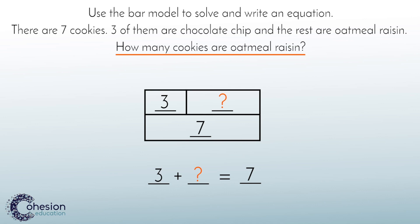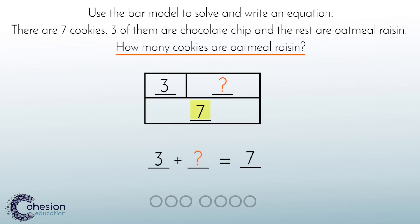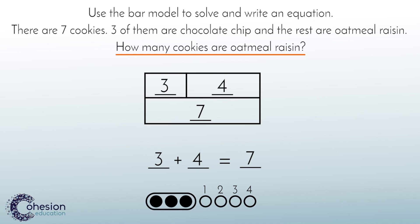Students will count on from three until they get to seven. They can use their fingers to count or draw circles to represent the equation. Since three is four away from seven, they will determine that there are four oatmeal raisin cookies and fill in the missing part. This is how students use a bar model to solve addition problems with a missing addend.